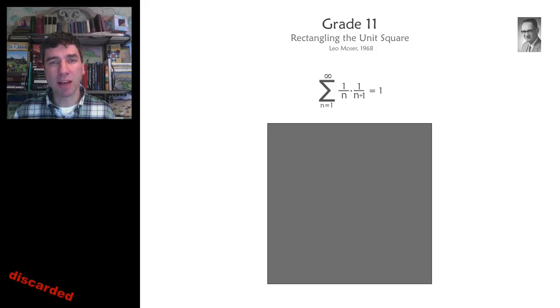Leo Moser observed that the sum 1 to infinity of 1 over n times 1 over n plus 1 is equal to 1. Well, these could be rectangles.